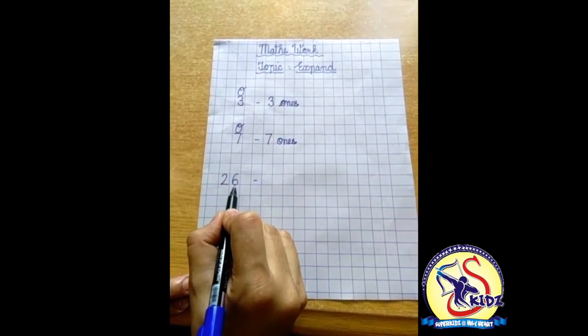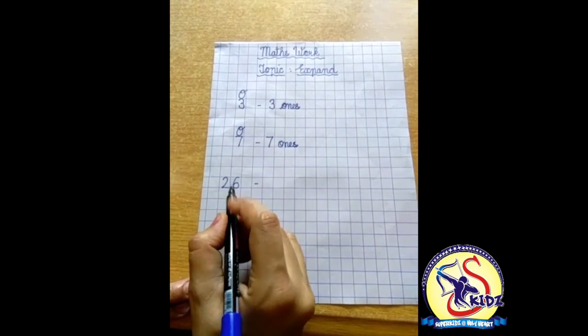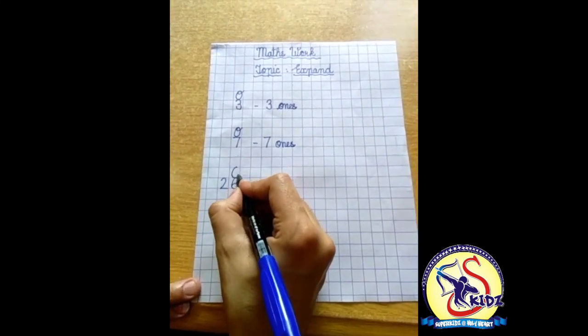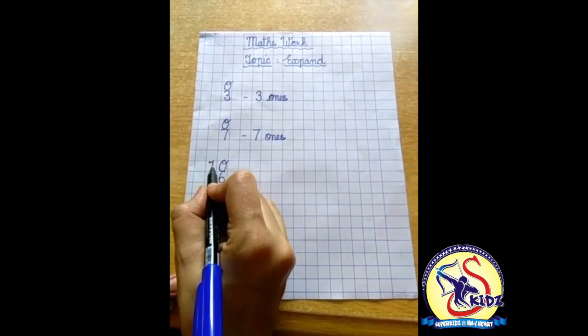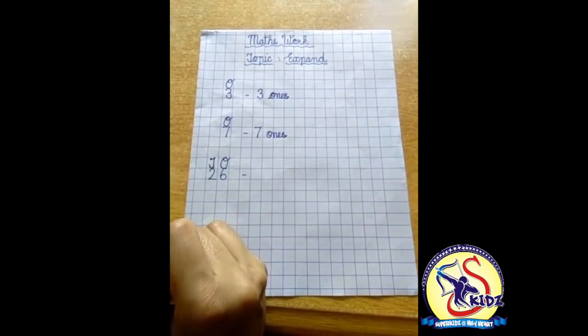So with a single digit we write O, and with a double digit we write T. T means tens.